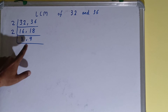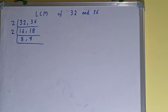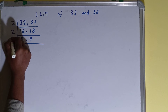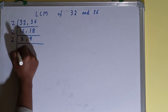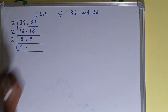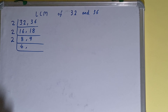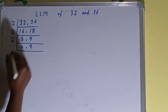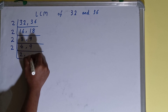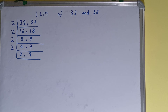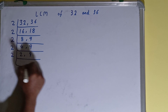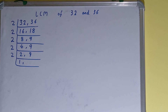Now only the first number is divisible by 2, not the second one. So we divide only the first number: 8 becomes 4, and we copy 9 down. Again only the first number is divisible by 2, so we divide: 4 becomes 2, and we copy 9 down.